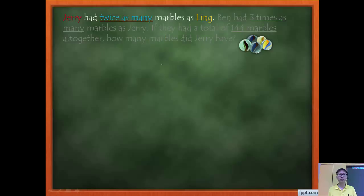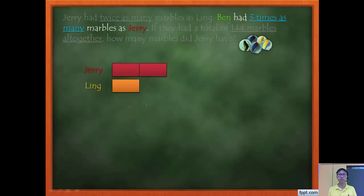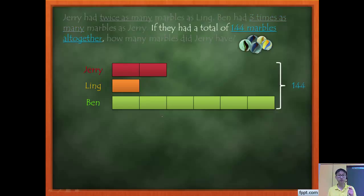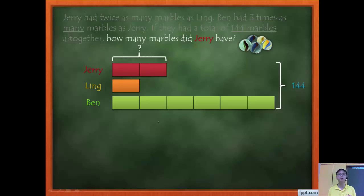Let's draw the model. Jerry has twice as many as Ling, so Jerry gets 2 units and Ling gets 1. Ben has three times as many as Jerry. Jerry has 2 boxes, so Ben gets 6 boxes — because three times Jerry means three times two units. The total is 144, and we need to find how many marbles Jerry has.